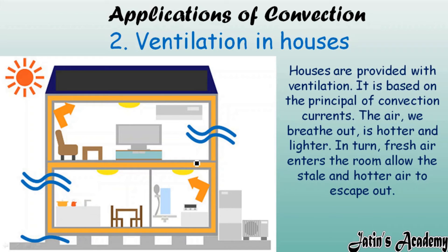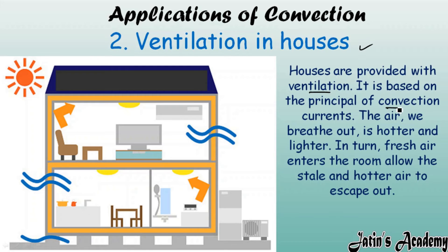The next application of convection is ventilation in houses. Exhaust fans and windows are provided so that carbon dioxide and stale air can go outside and fresh air from outside can come inside. Houses and buildings are always provided with ventilation, and this ventilation process is based on the principle of convection current.